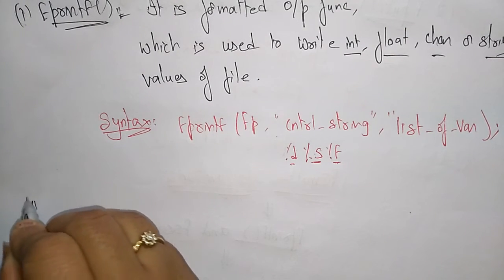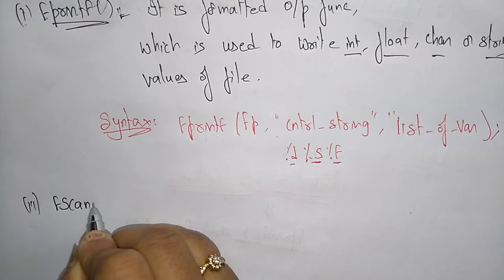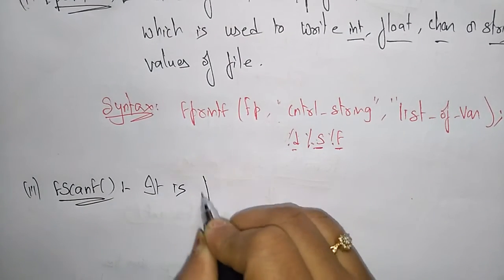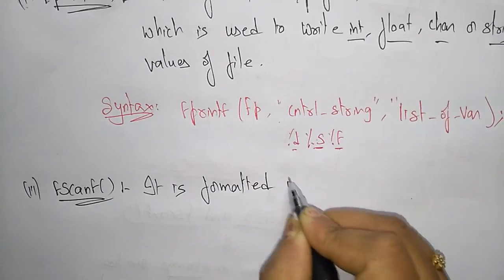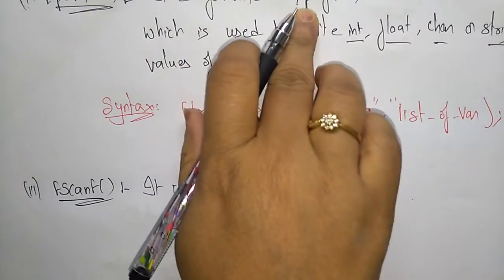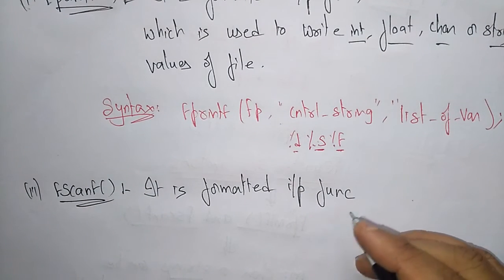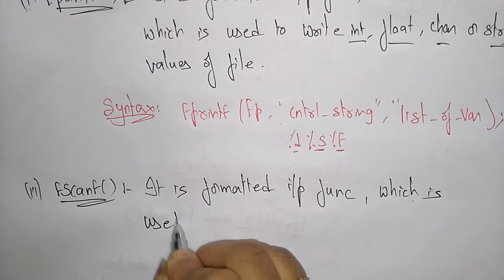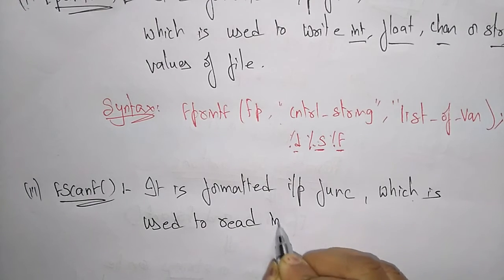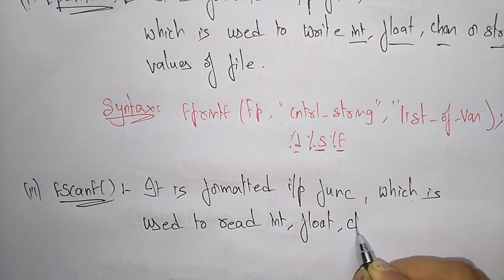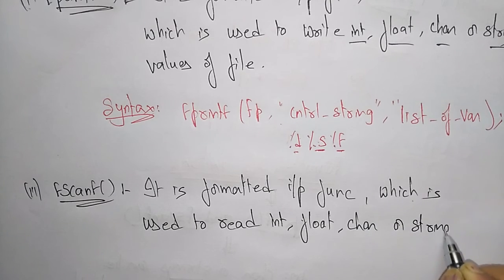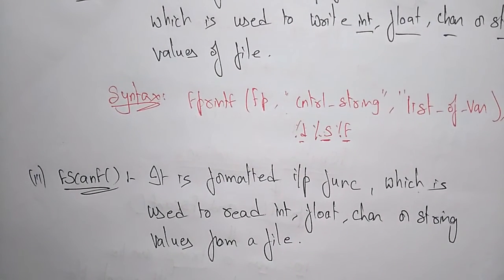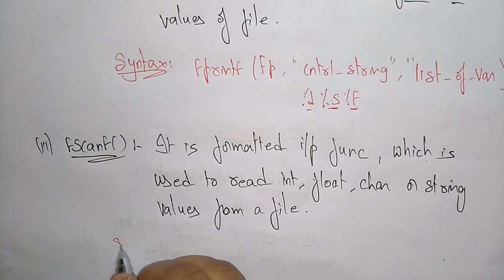Now let us see the syntax for fscanf. fscanf is a formatted input function, whereas fprintf is the output function. fscanf is used to read integers, float, character, or string values from a file.